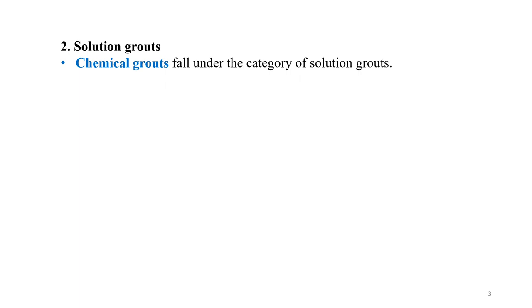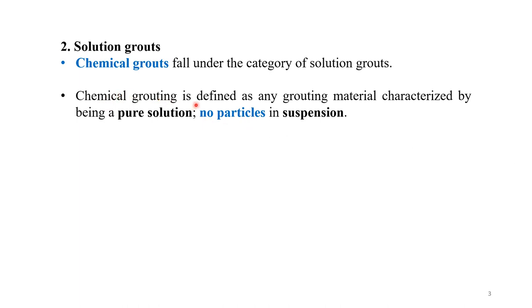Next is solution grout. When the grouting material is dissolved, it fully dissolves — it will not be in suspension or particulate form. Chemical grouts fall under the category of solution grout. A chemical grout is defined as any grouting material characterized by being a pure solution with no particles in suspension. Once the grouting material is dissolved, it will not be visible. That is why it is called solution grout.